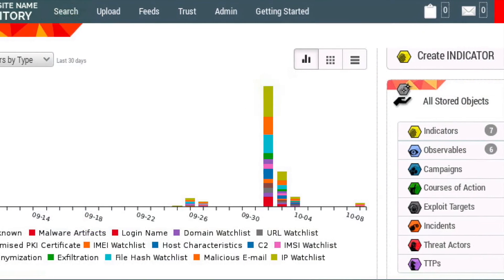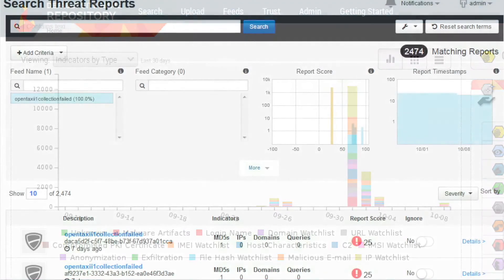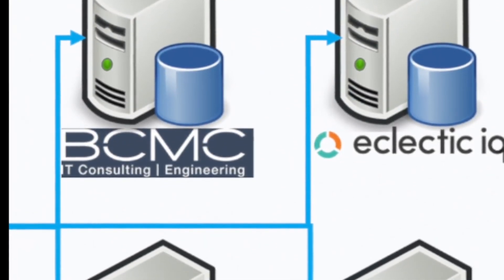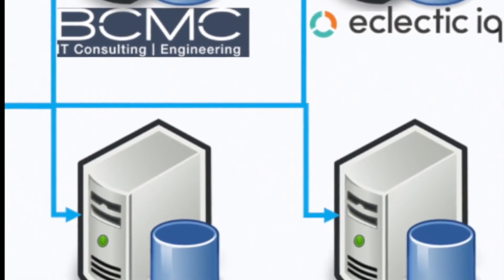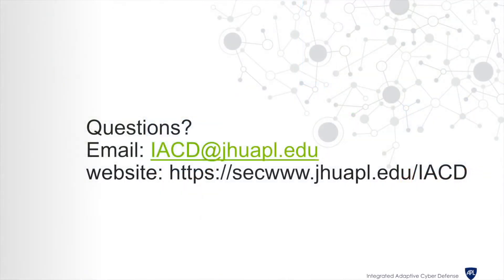Next, we look at the SOLTRA dashboard with all of the threat intel that it has pulled from the feed as well. Third, we have Carbon Black, an endpoint protection service, showing it can pull from the feed and possibly take action on the messages received. These three subscribers show that it is possible for an environment to use any of the subscribers currently being used in the architecture. This concludes the overview of our Spiral 9 experiment. If you have any questions, comments, or concerns, feel free to email us at iacd@jhuapl.edu or visit the website on the screen. Thanks for watching.